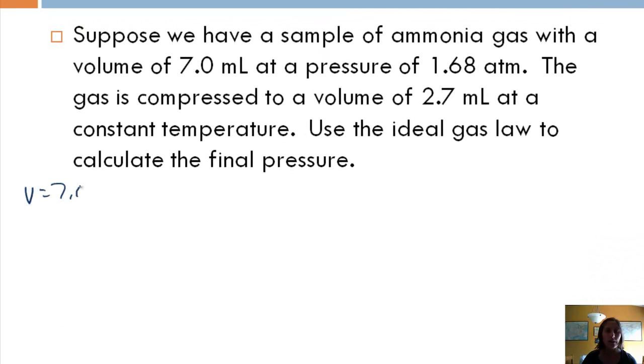So we have a volume of 7 milliliters. Right away, you would probably need to convert that to liters unless all your other volumes are in the same unit. We've got a pressure of 1.68 atmospheres. The gas is compressed to a volume of 2.7 milliliters, so that's our V2. Because they are the same unit, I don't need to convert unless I'm asked to specifically. It says temperature is constant. And use the Ideal Gas Law to calculate the final pressure, so we're looking for P2. We don't know the temperature or the moles, so using just the Ideal Gas Law is going to be a little difficult.